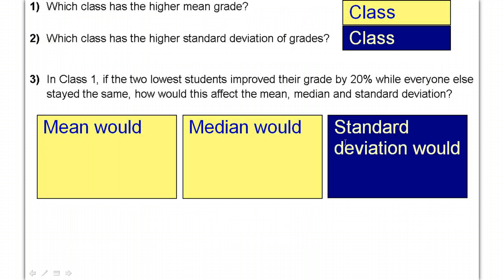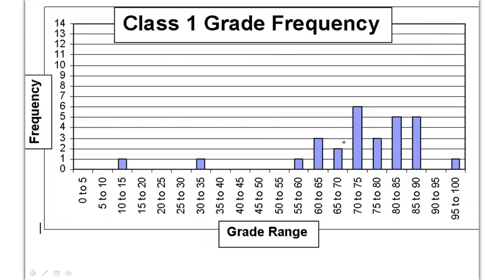Now let's talk about question 2: which class has the higher standard deviation? Show me on your fingers which class you think has the higher standard deviation. Most people voted that class 1 had the higher standard deviation. What do we look at when we're looking at the graph to see which one has a higher standard deviation? If it's not the middle — that matters for the mean — what does matter for standard deviation?